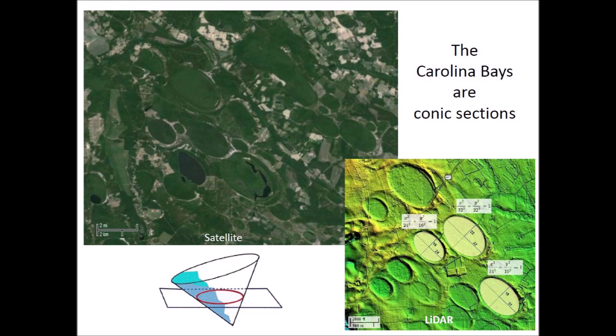Well-preserved Carolina Bays are conic sections that have mathematically precise elliptical geomorphology. This is a clue that the bays originated as inclined conical cavities, also called penetration funnels. The Glacier Ice Impact Hypothesis proposes that viscous relaxation decreased the depth of the conical cavities to produce the shallow elliptical features found today in Nebraska and on the East Coast of the United States.